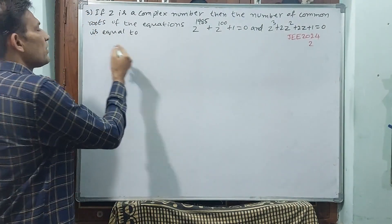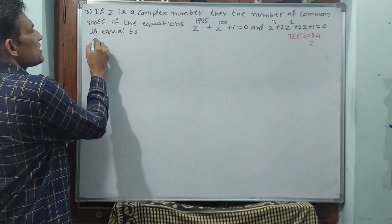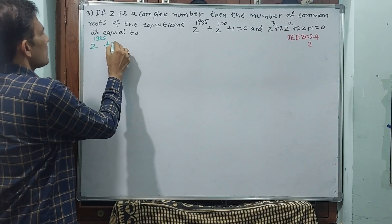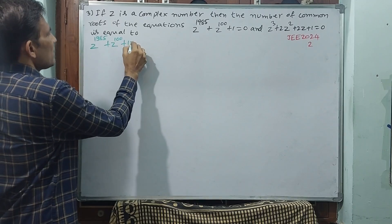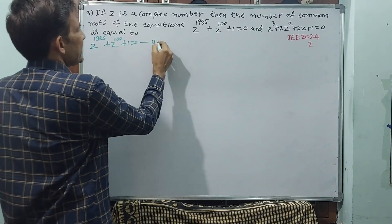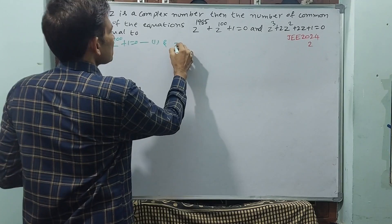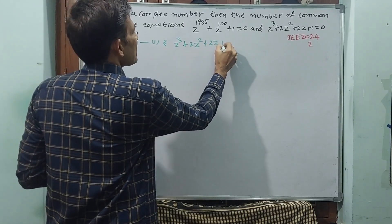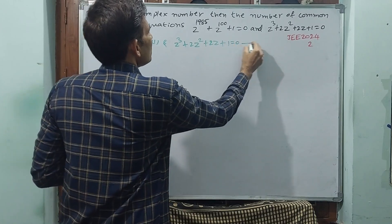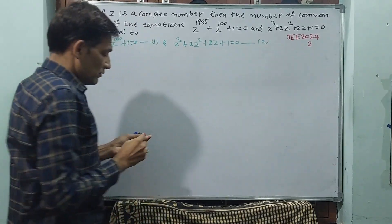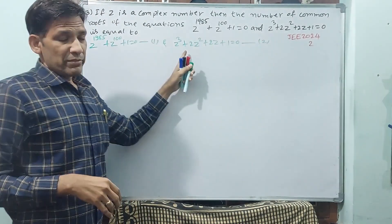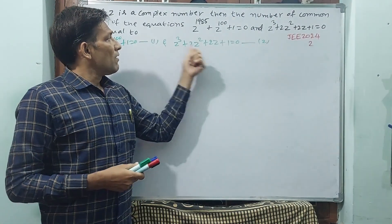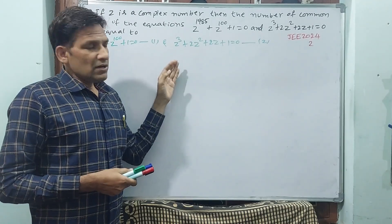I will write equation 1 as Z to the power 1985 plus Z to the power 100 plus 1 equal to 0, and equation 2 as Z-cube plus 2Z-square plus 2Z plus 1 equal to 0. I want to solve equation 2 first to find those three roots. For a cubic equation, first use the trial and error method to find one root.